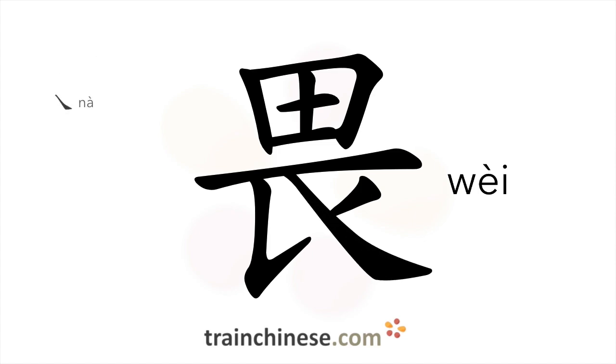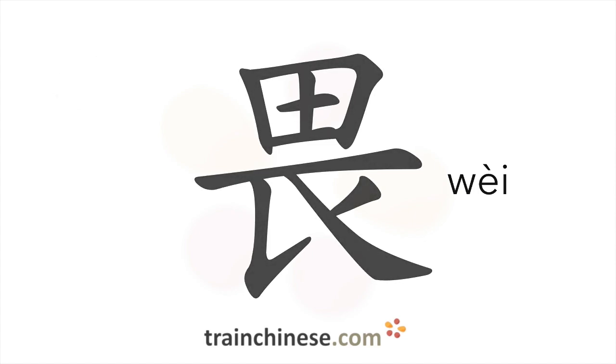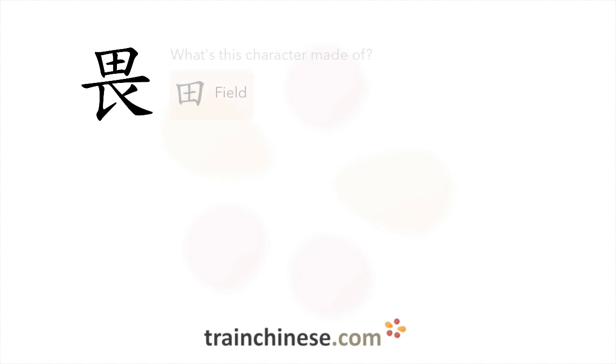Let's look at how this character breaks down. The radical meaning field appears here.